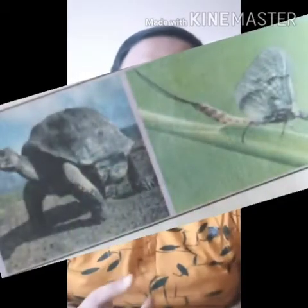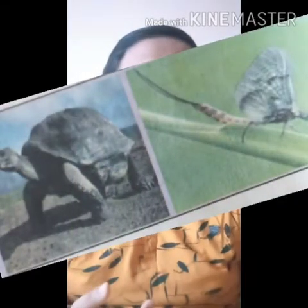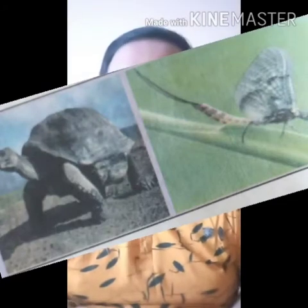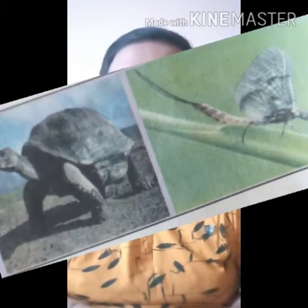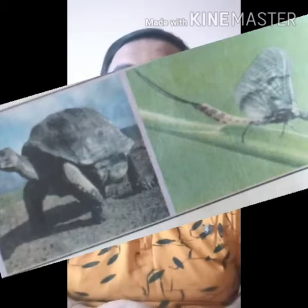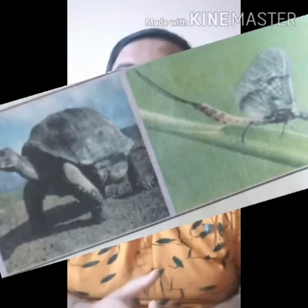An ostrich can live up to 50 years. The giant turtle, found in the Galapagos Islands in South America, has a life span of about 170 years.